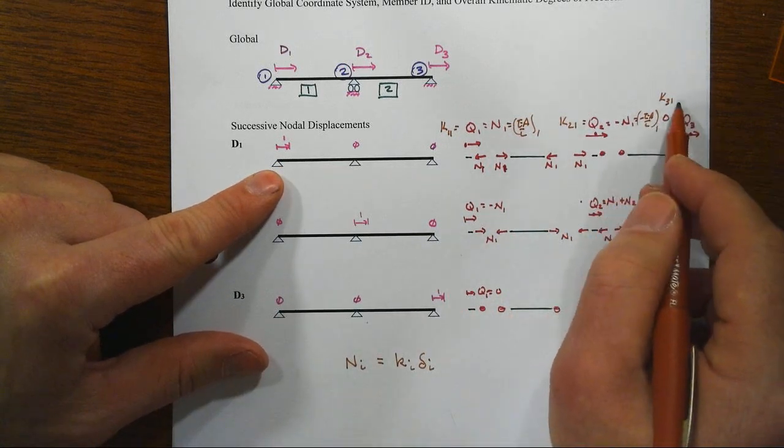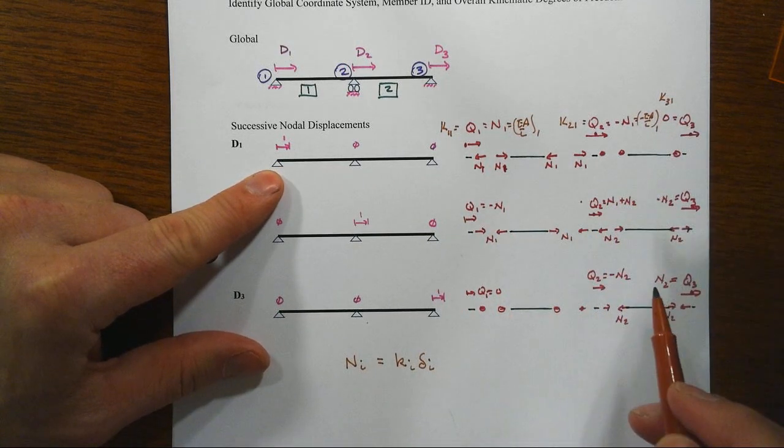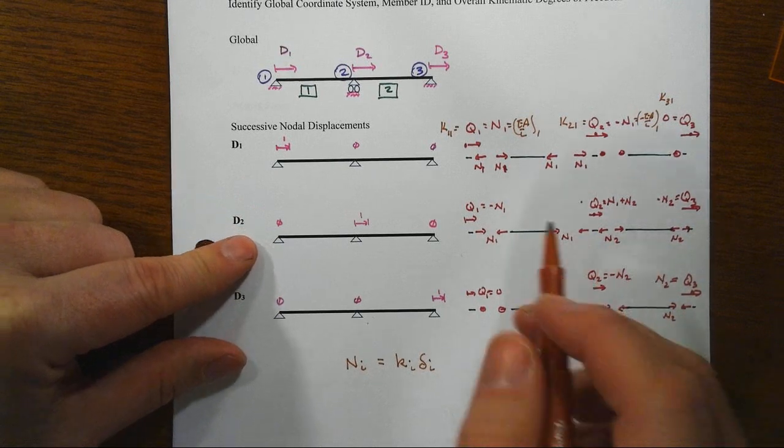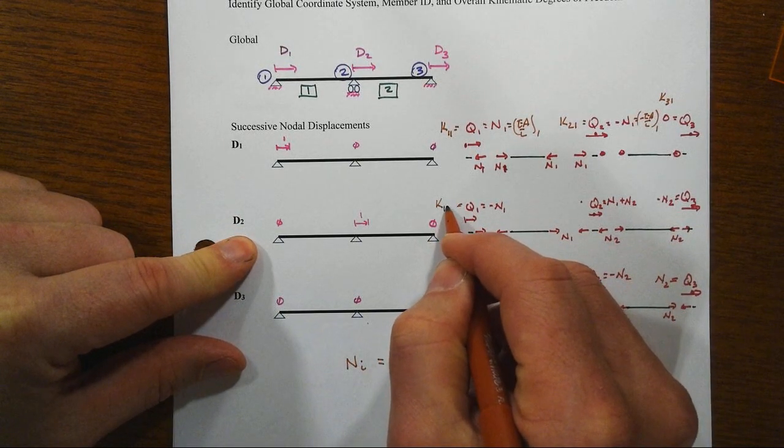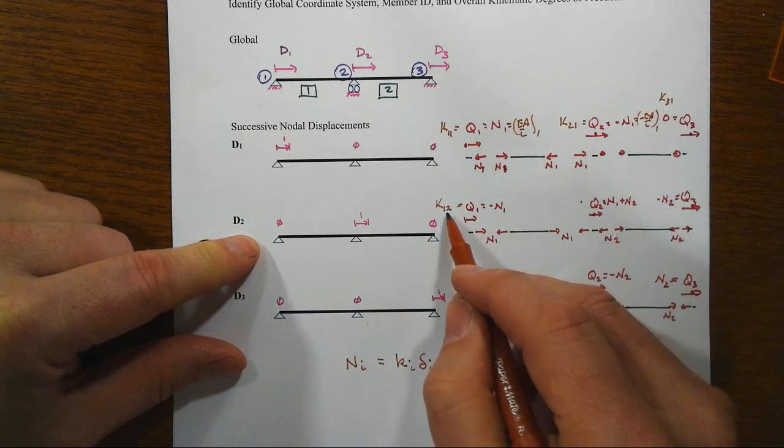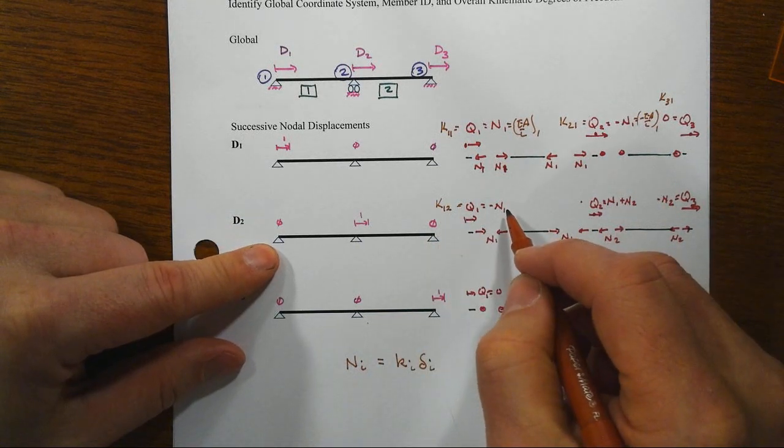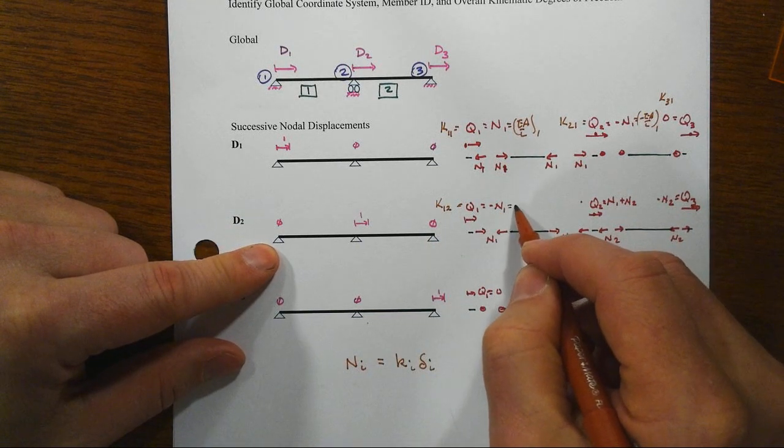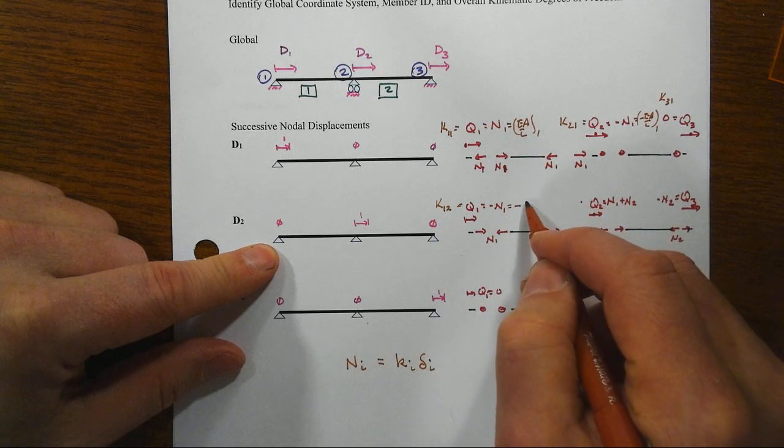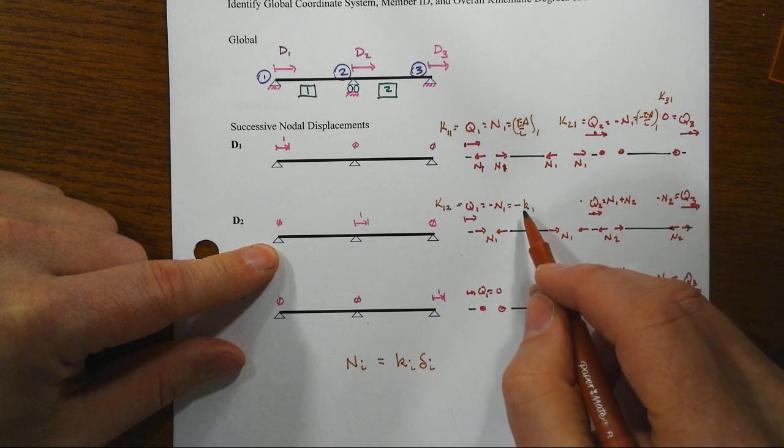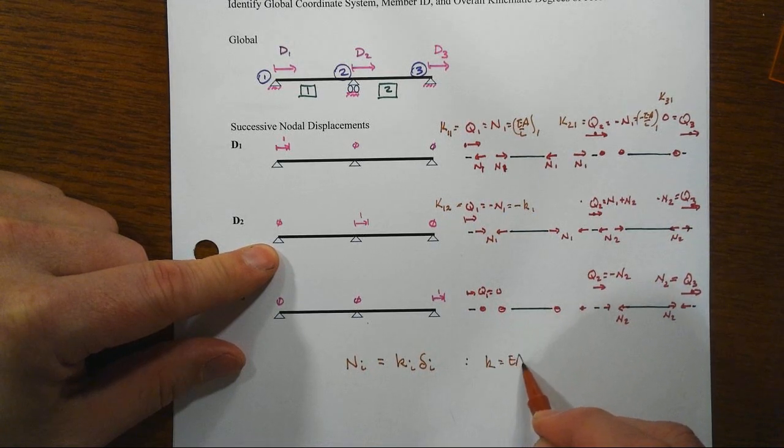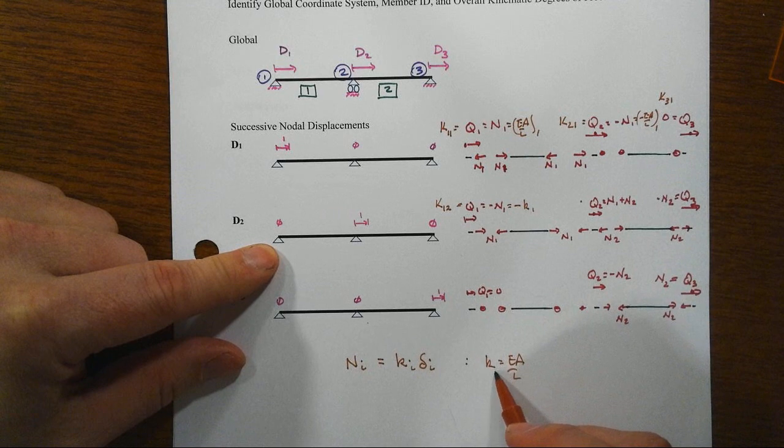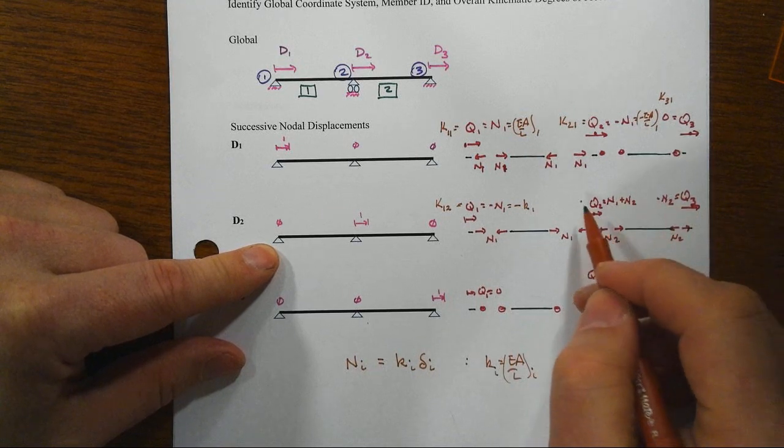And this last one, when we go to the second one, then what we're given is that K at 1 caused by the unit displacement at 2, K12 is equal to minus N1 or minus EA over L, so minus K1, where K1, where K is by definition EA over L for that particular member.